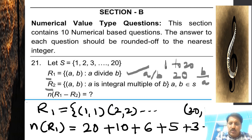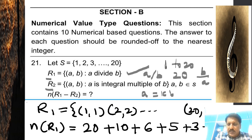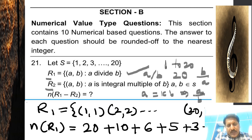Relation R2 is defined on the same set, and it is almost similar to R1, but here a is an integral multiple of b — meaning a is some constant times b, so a is divisible by b.